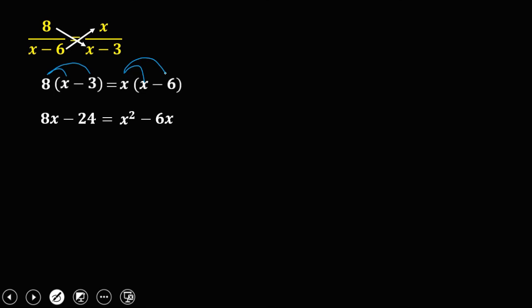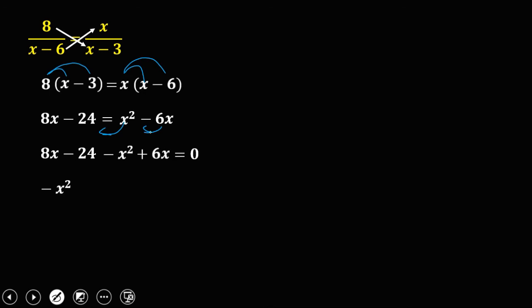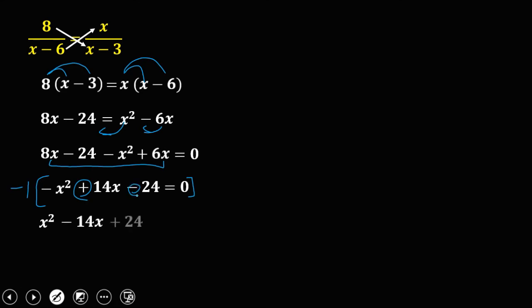Equate the equation to zero by transposing everything to the left side. The x squared becomes negative x squared, and negative 6x becomes positive 6x, equals zero. Arrange by highest exponent: negative x squared, then combine 8x plus 6x to get 14x, then negative 24, equals zero. Since the first term is negative, multiply the whole equation by negative 1 to get positive x squared minus 14x plus 24 equals zero.